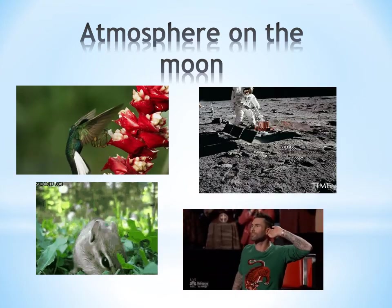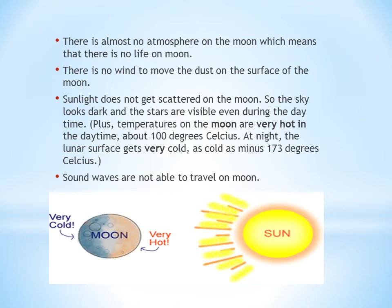There is no atmosphere on the moon, which means there is no life — no plants and animals. There is no wind to move the dust on the surface of the moon. Sound waves are not able to travel on the moon because there is no medium over there.